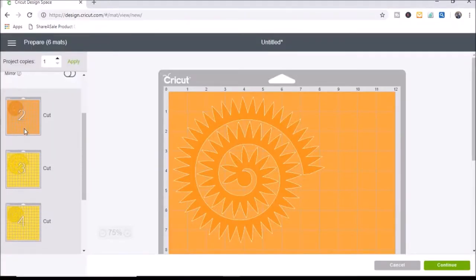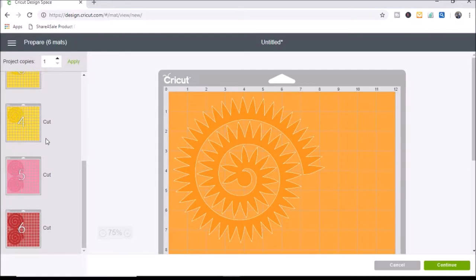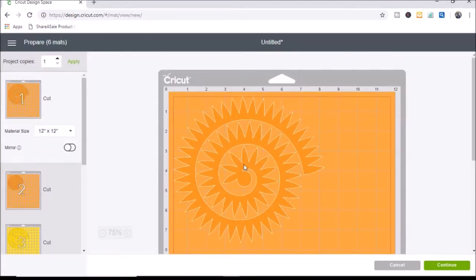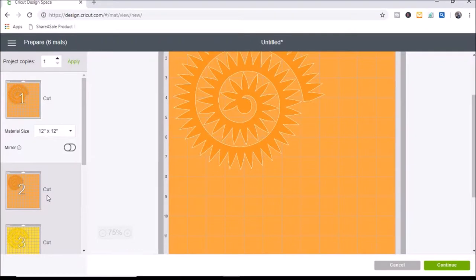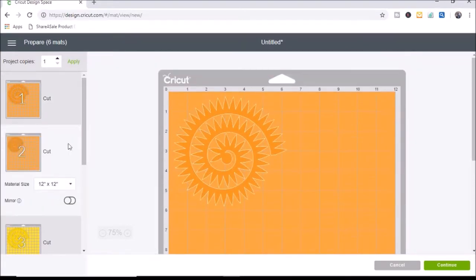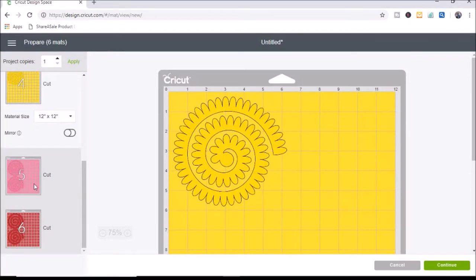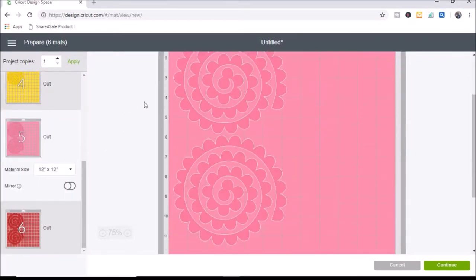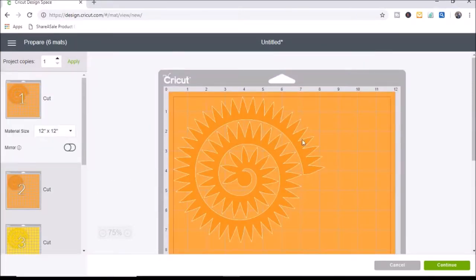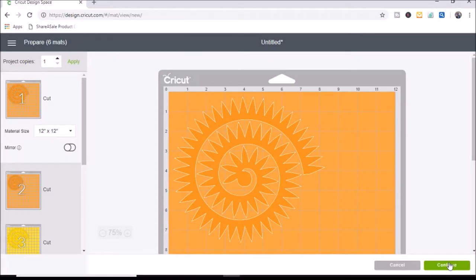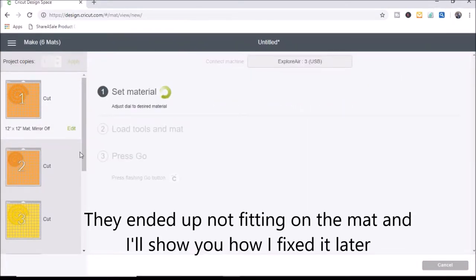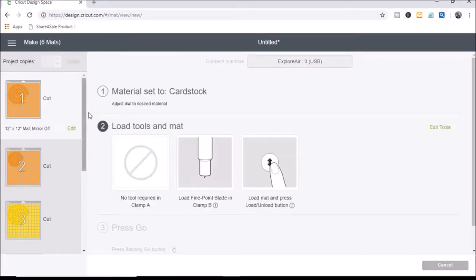It'll separate each color onto different mats. This one I only put on one mat because it doesn't fit on to two mats. So we have two of these colors and then we have our next color. Then these last two are both six inches and they actually fit all on one mat so it'll put it all on one mat. The next thing I want to do is click on continue and then I have it set to cardstock on my dial and now I'm just ready to show you on my machine how I cut these out.